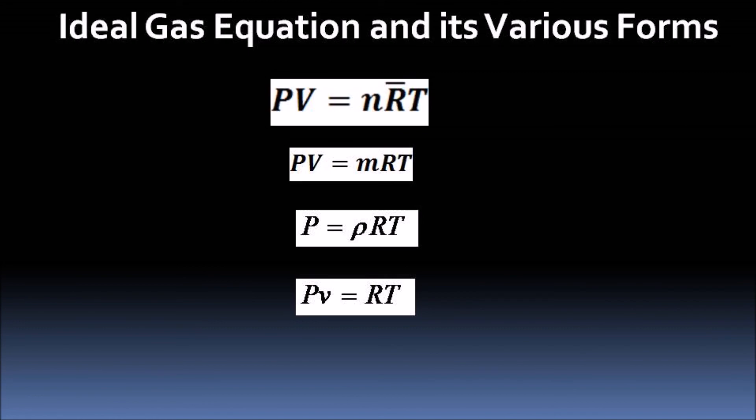Then we transform it to PV = mRT, where m shows the mass of the gas and R shows the specific gas constant which varies from gas to gas. We can also transform this equation to P = ρRT, where ρ is the density of the gas, or to Pv = RT, where v is the specific volume of the gas.